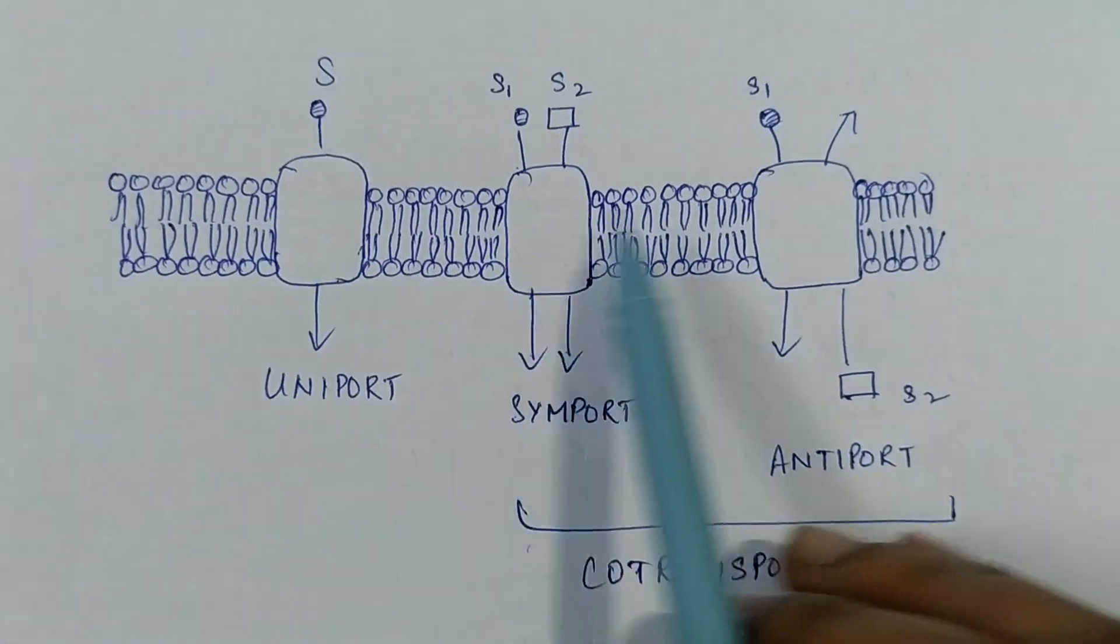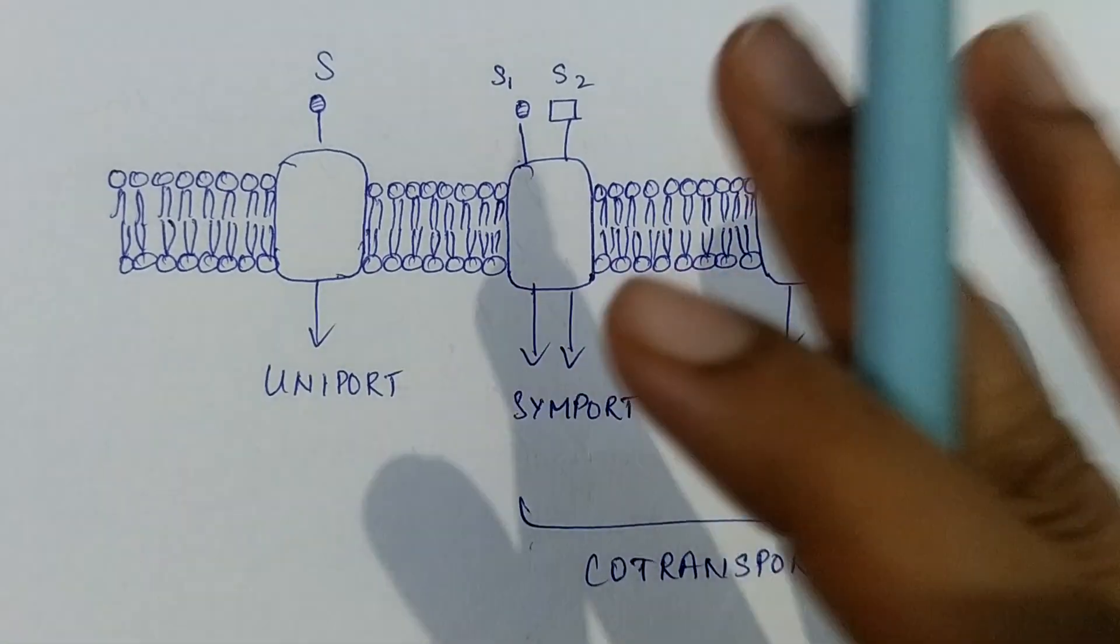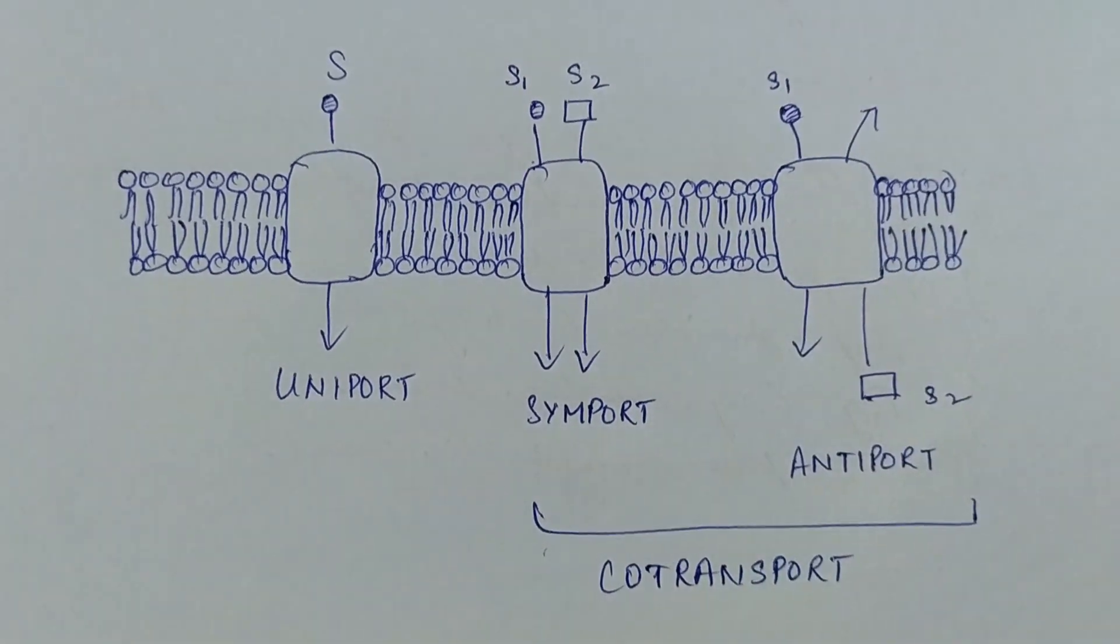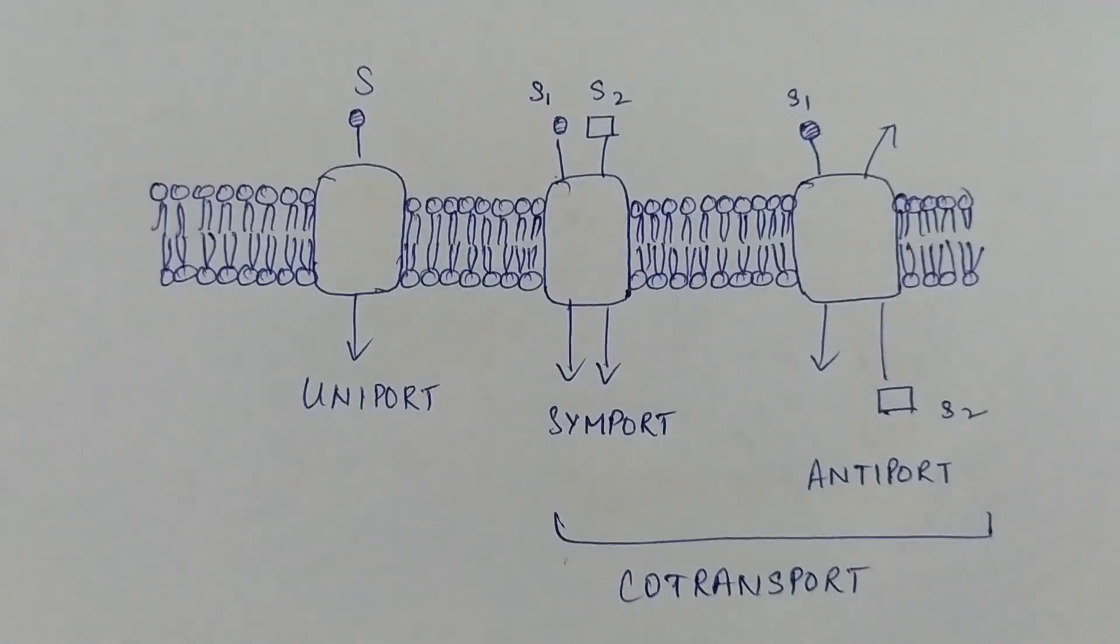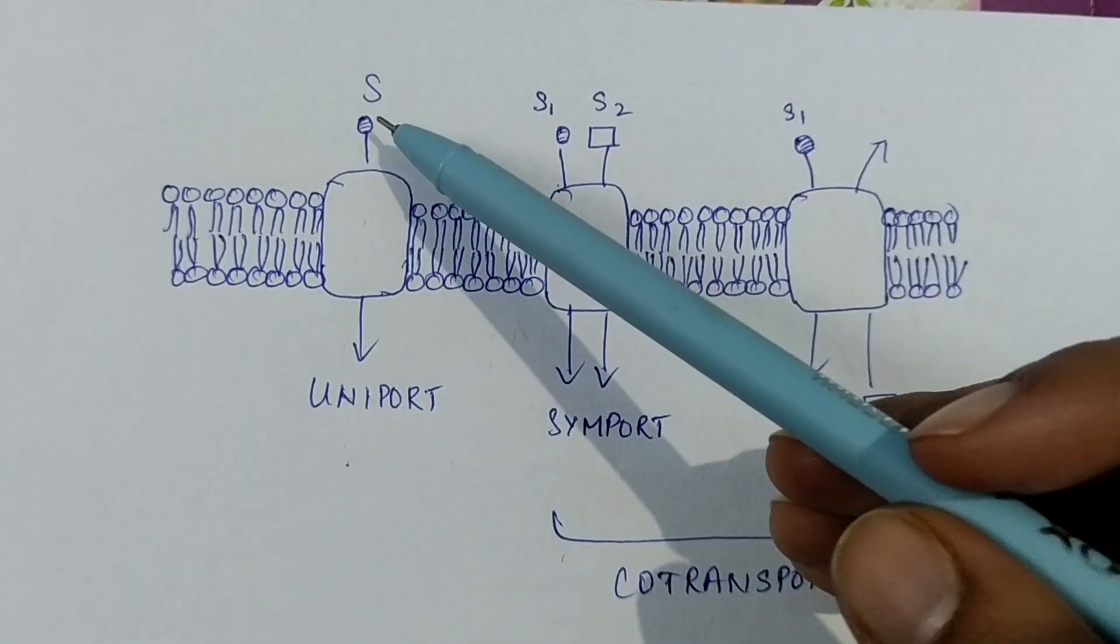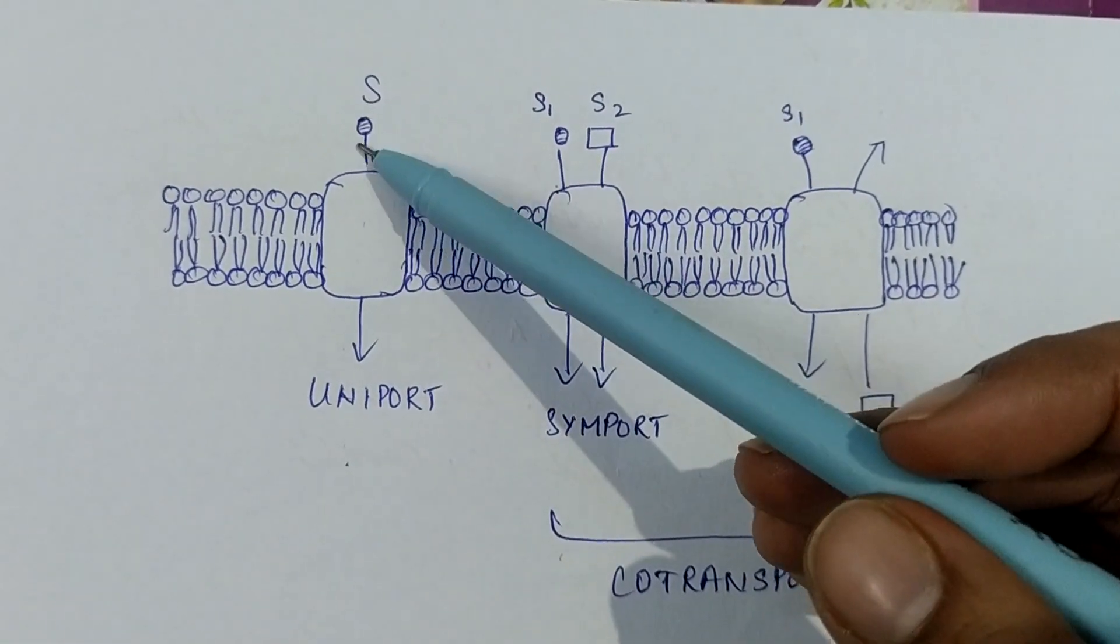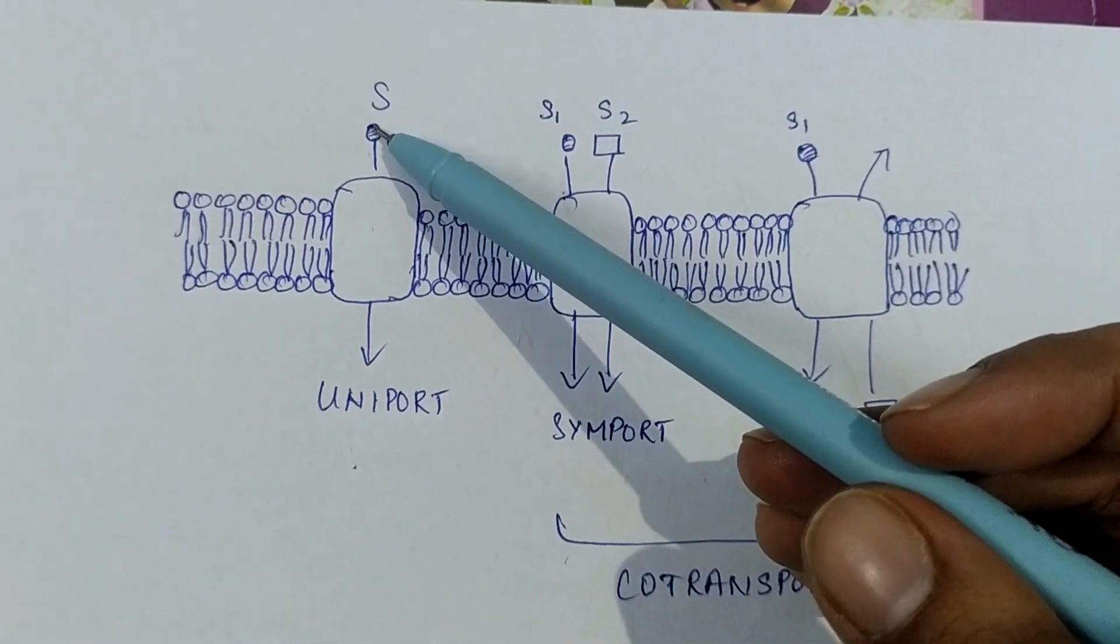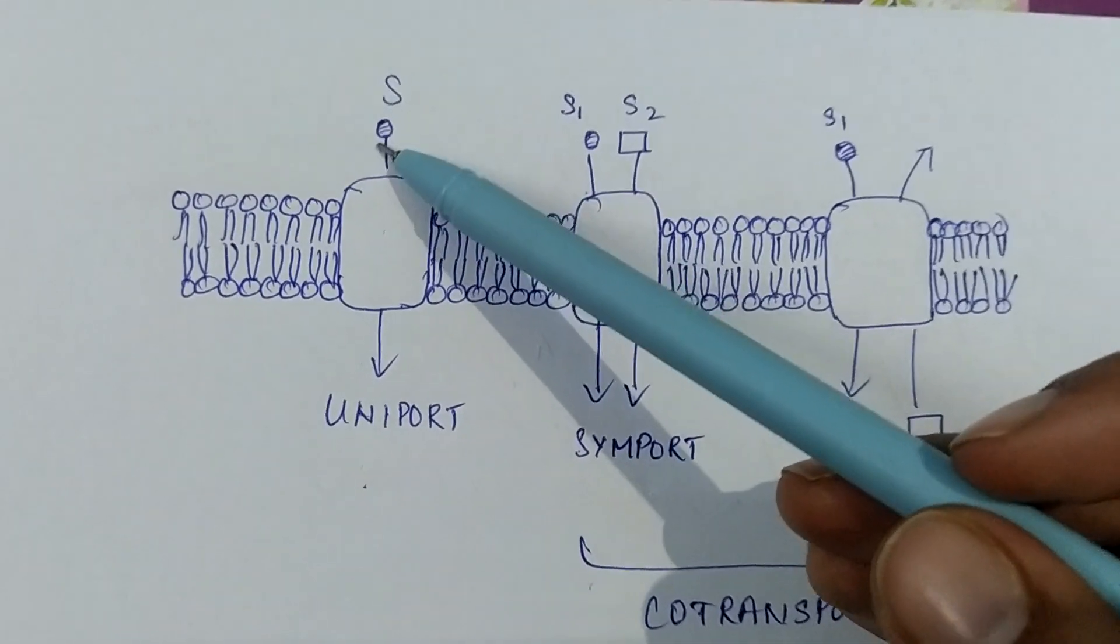And by these we have indicated the presence of various types of proteins. So the first kind of movement is uniport, where a single molecule - if we consider this as a molecule - the single molecule will move in a single direction.